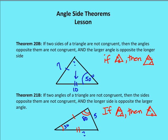Moving on to offshoots of both theorems. The first relates to sides: if two sides of a triangle are not congruent, then the angles opposite them are not congruent, and the larger angle is opposite the longer side. In the diagram, one side measures 7 and the other 10, with a given angle of 50 degrees. The angle opposite the side of length 10 must be larger than 50 degrees, because the side opposite it is longer.